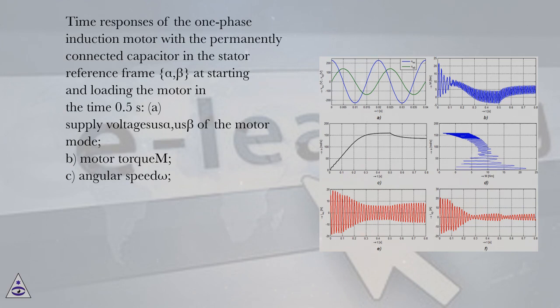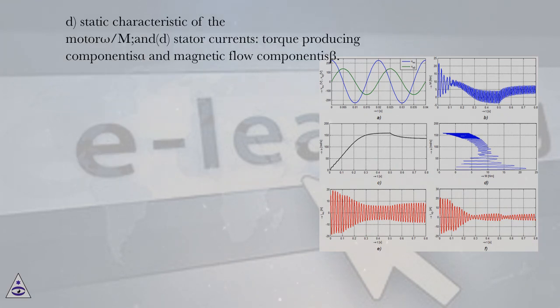(a) supply voltages u_s alpha and u_s beta of the motor, (b) motor torque M, (c) angular speed omega, (d) static characteristic of the motor omega/M, and (d) stator currents: torque producing components i_s alpha and magnetic flow components i_s beta.